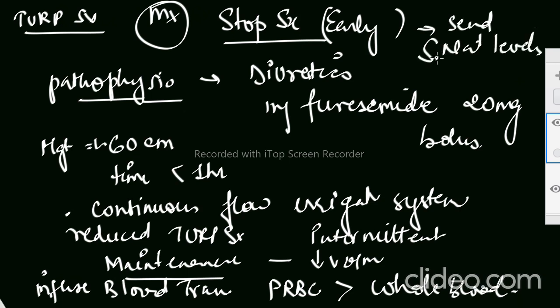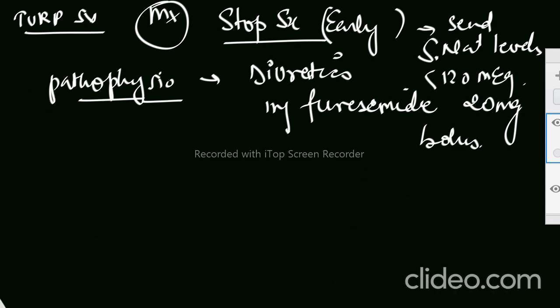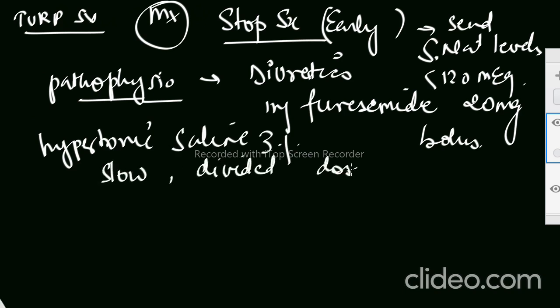So the sodium levels we will check, and if they are less than 120, means if they are very less and the patient is also symptomatic, then you may have to give hypertonic saline. But hypertonic saline 3% have to be given cautiously. You have to give it slow as well as in divided doses, plus you have to simultaneously keep on monitoring sodium levels. We all know that if you infuse it rapidly, so this is your viva question, what it can cause?